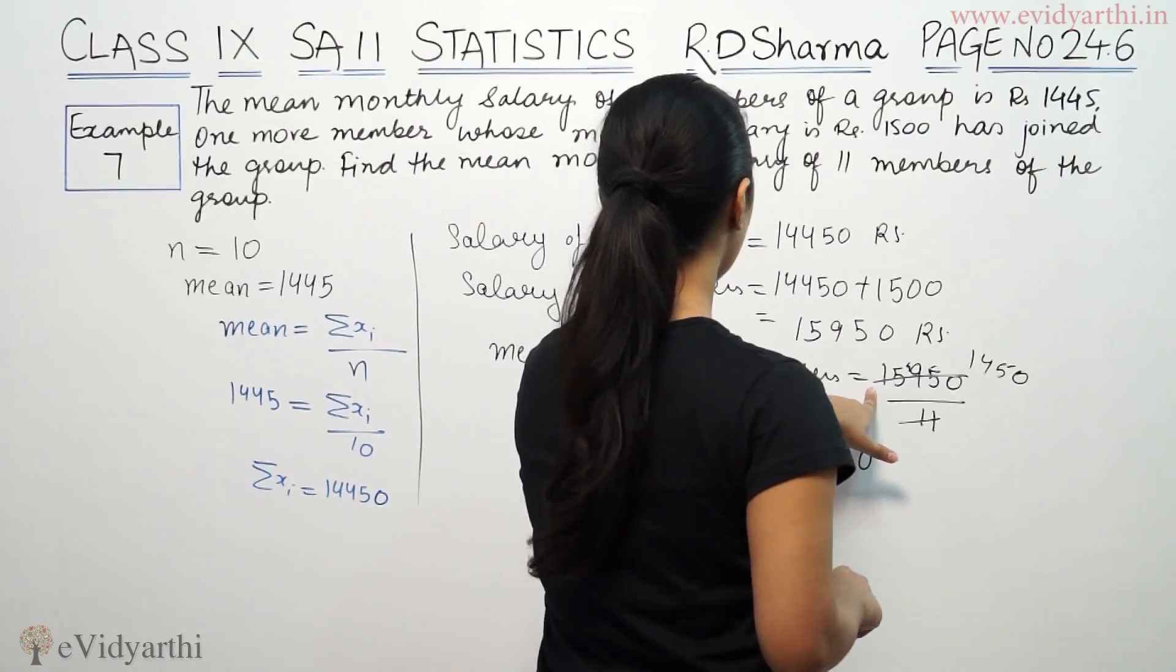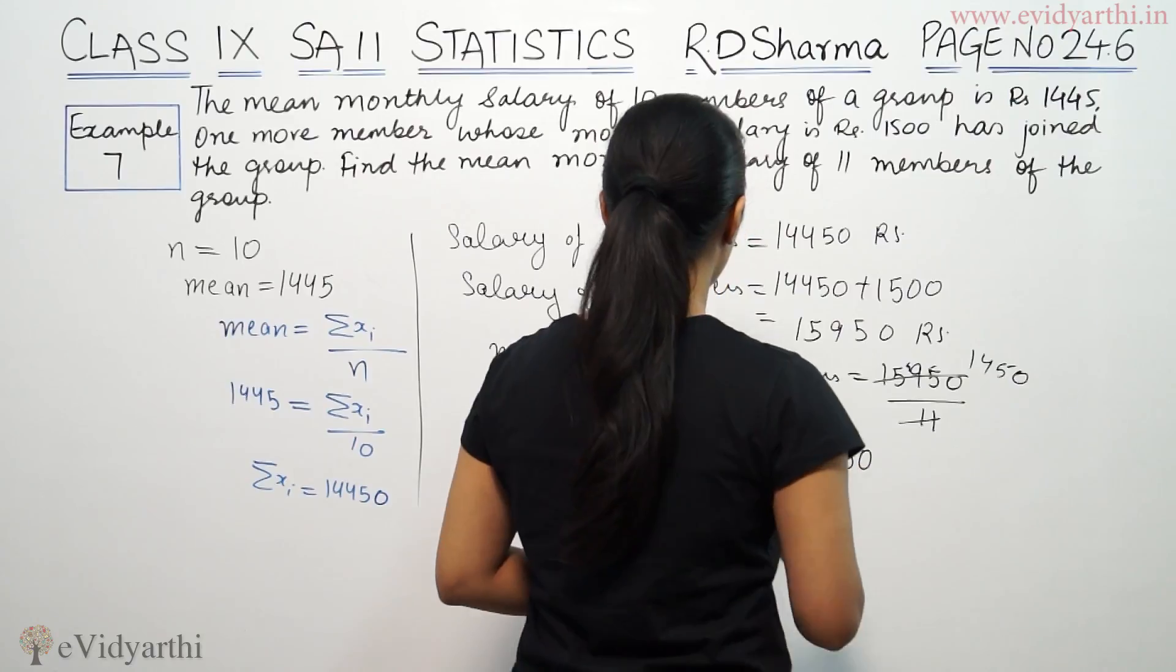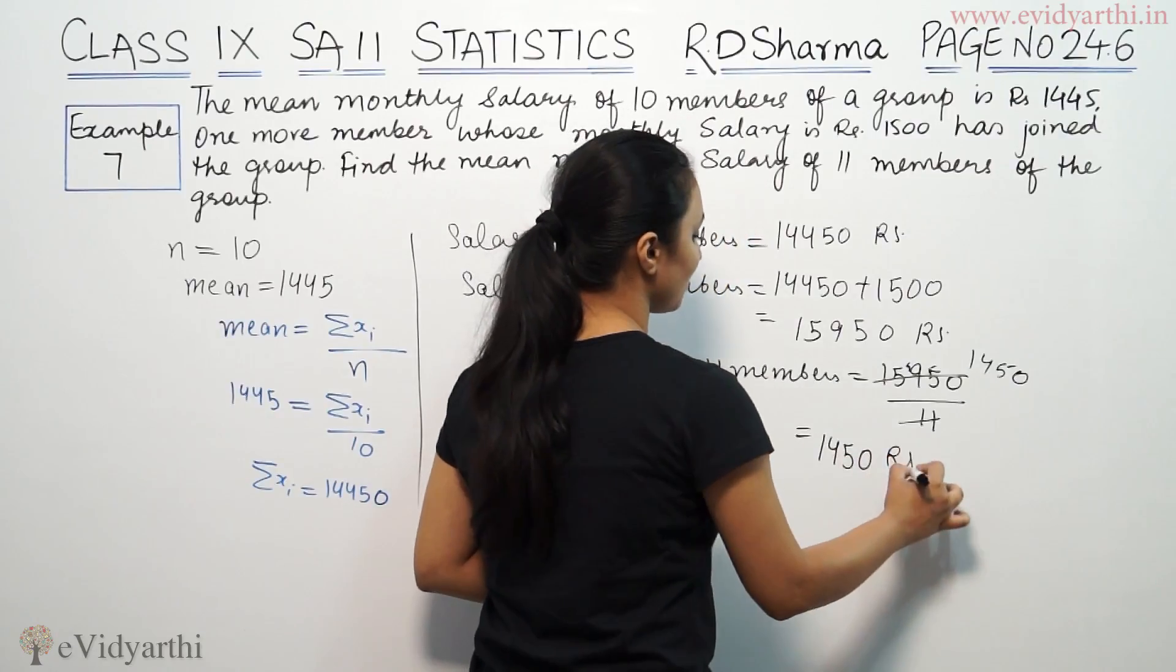This is 11 upon 11, then 11 bacha 4. So 1450 is the salary of 11 members. This is the mean.